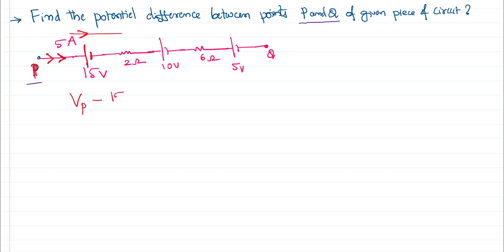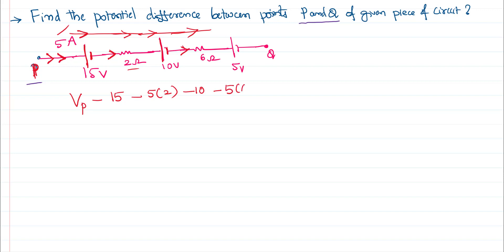The current is going in this way and you are also going in the same way, so the potential drop across that is also negative: minus IR. I is 5 as given in the problem, R is 2. Now you again get the positive plate of the battery — treat that EMF as negative, minus 10. You are going in this direction and the current is also going in the same direction, so treat that potential drop as negative: minus IR, 5 times 6.